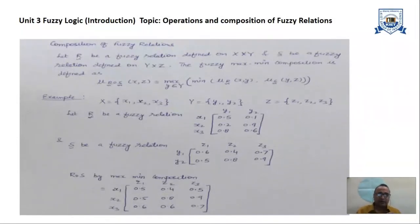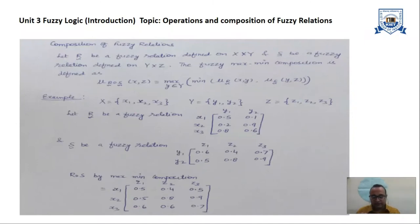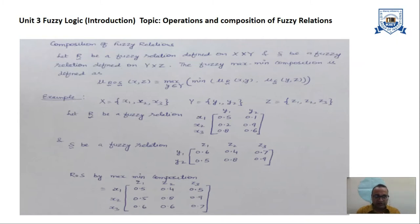Now we are coming to the second part, which is the composition of the fuzzy relation — the most important topic of Unit 3. Composition means, say for example, we have two relations. The first relation has a relationship between fuzzy set X and fuzzy set Y, and then we have another relationship which connects elements of universal set Y with elements of universal set Z. Our objective is to make a final relationship that provides the connection of all elements in set X with the elements of set Z.